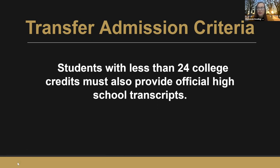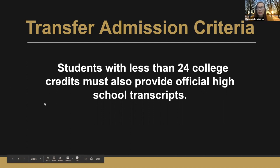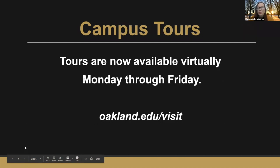Transfer students who haven't quite hit the 24 credit mark may also apply to OU, but must provide official high school transcripts as well. In this case, they're considered for admission based on both their college and high school work. We would need to see a minimum GPA of 2.5 cumulative from both high school and college transcripts. If students are interested in taking a tour of our campus, which we strongly encourage, we offer virtual tours daily and on most weekdays.